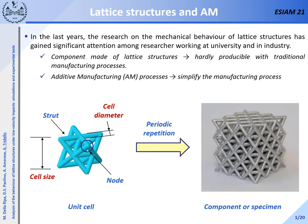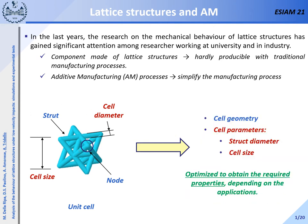Lattice structures are defined as three-dimensional structures composed of interconnected cells. Each cell is composed of struts and nodes, as shown in this slide. Cell geometry, as well as cell parameters like the strut diameter and the cell size, significantly affect the mechanical properties of the final component. These parameters, shown in red in this figure, can be optimized to obtain the required mechanical properties.